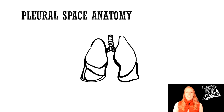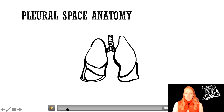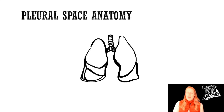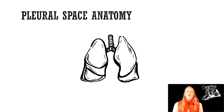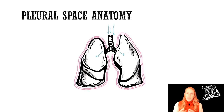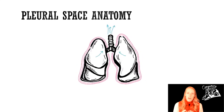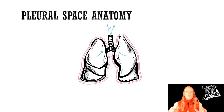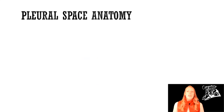Before we define those terms, we need a quick anatomy lesson. What is the pleural space? It's actually a terrible name because it shouldn't be a space — if something's in the space, it's not good. Essentially, the pleura is a double lining around the lungs. The main idea is that it allows the lungs to expand without causing friction, so the lungs don't rub on the ribs and puncture them.